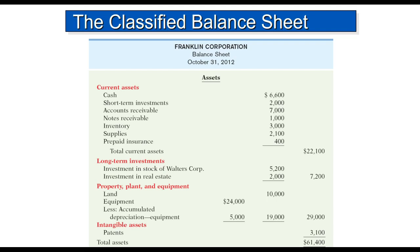Long-term investments are investments in the shares of another company that we're going to hold for a long period of time, or we invest in some property that we're going to use in the future but are buying now. These assets are not really operating assets for us — they're just investments we are holding. The operating assets are property, plant and equipment: land, equipment, less accumulated depreciation. Depreciation speaks to how much of the equipment we have used up.